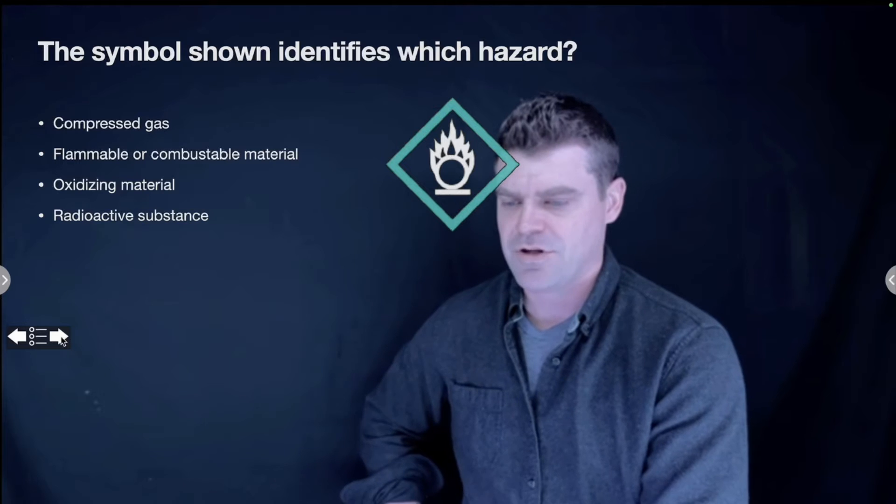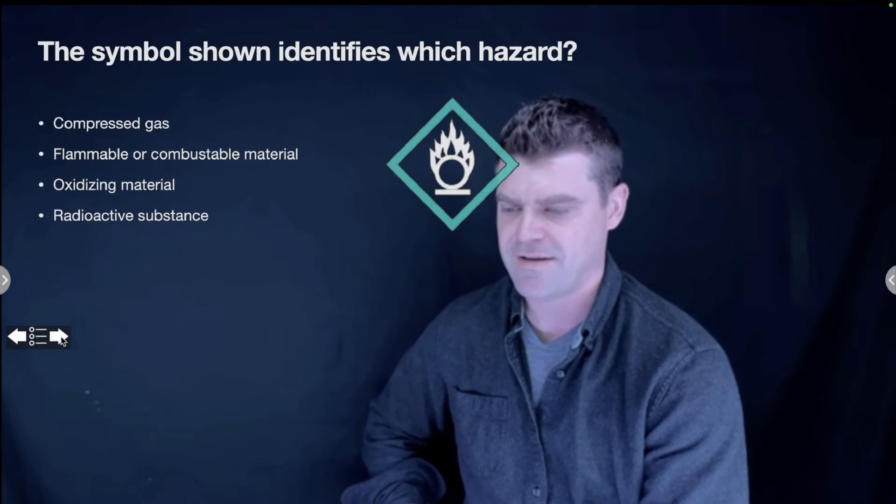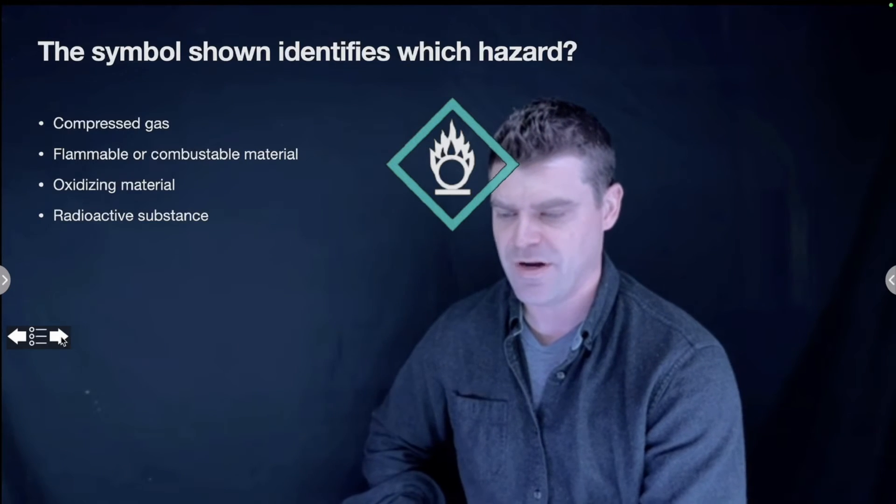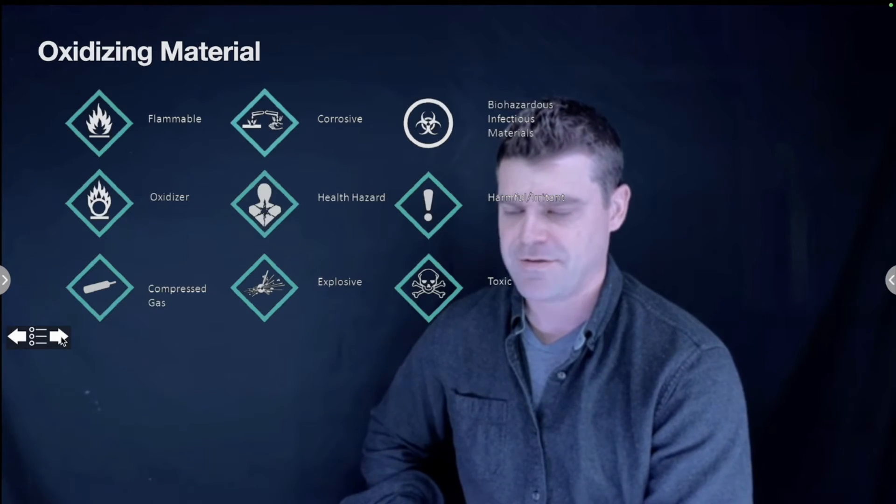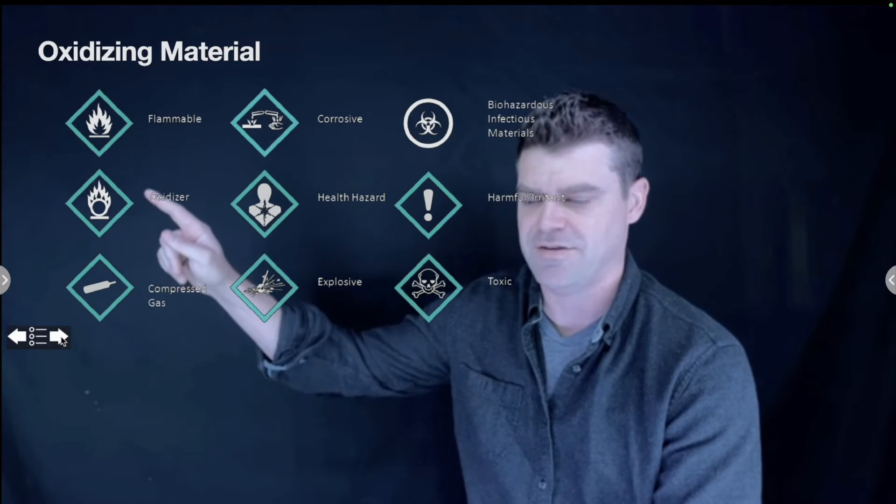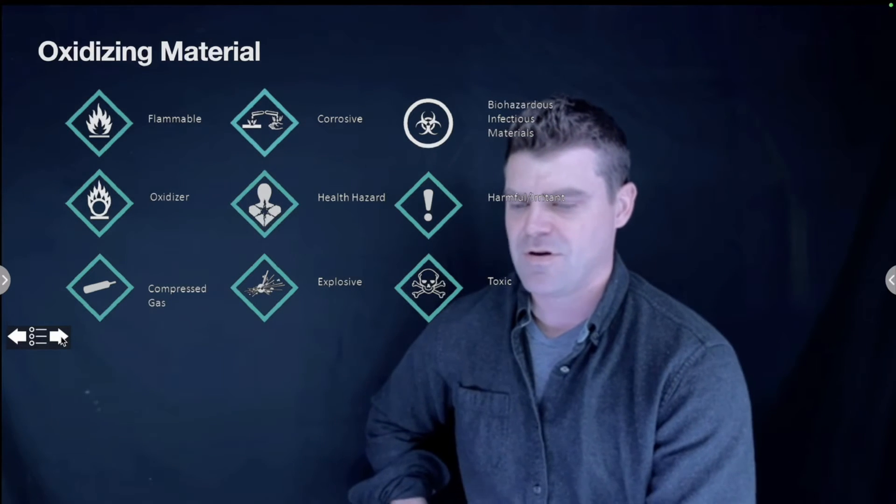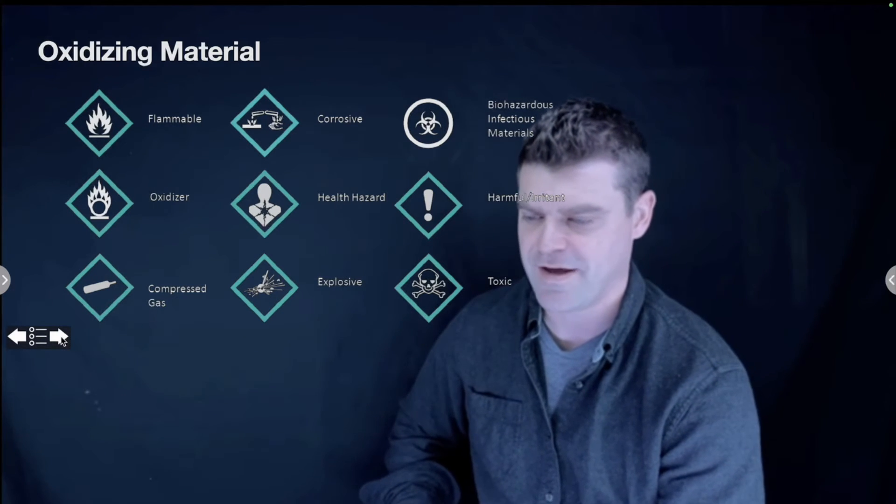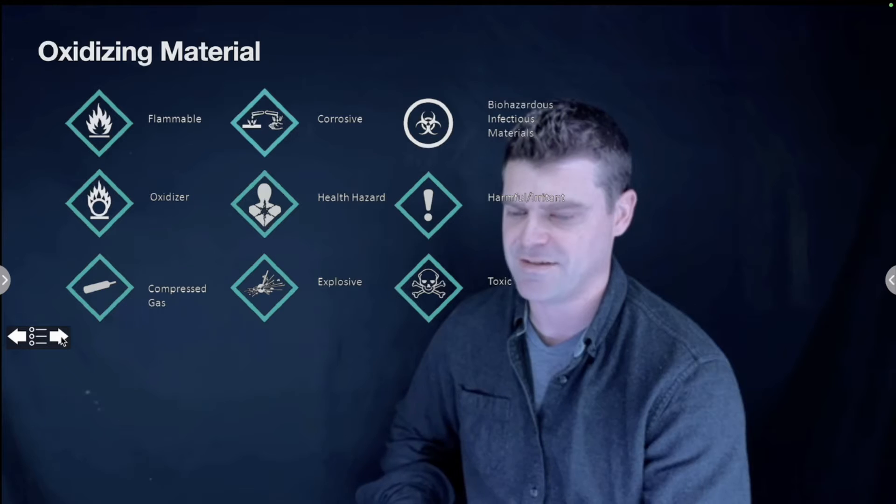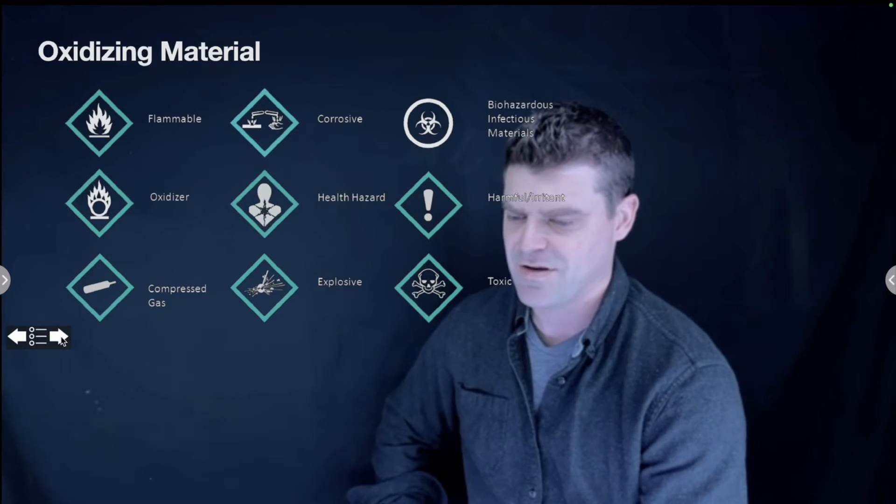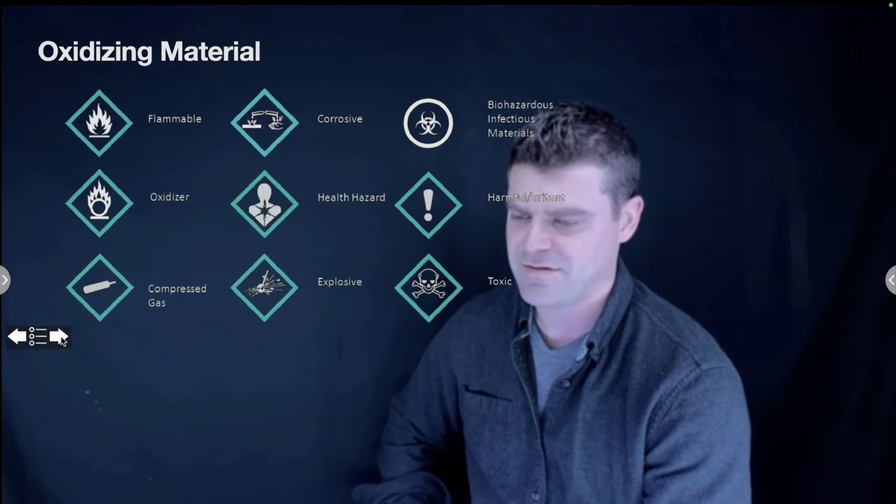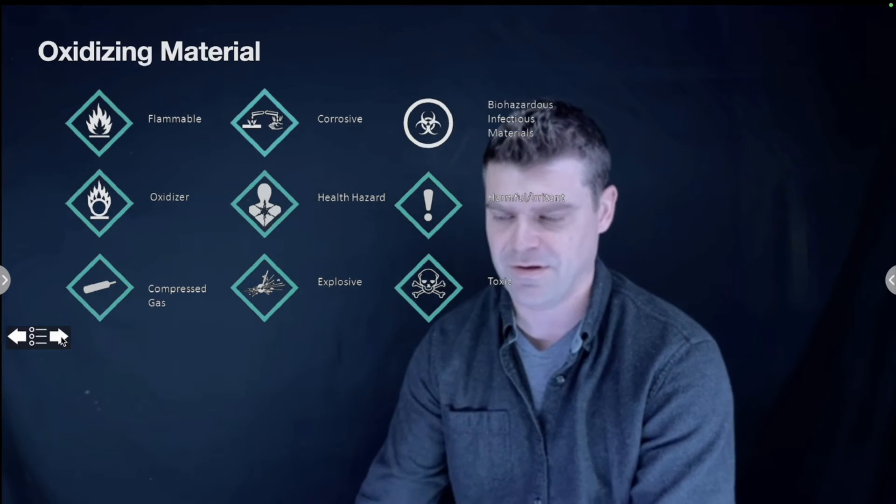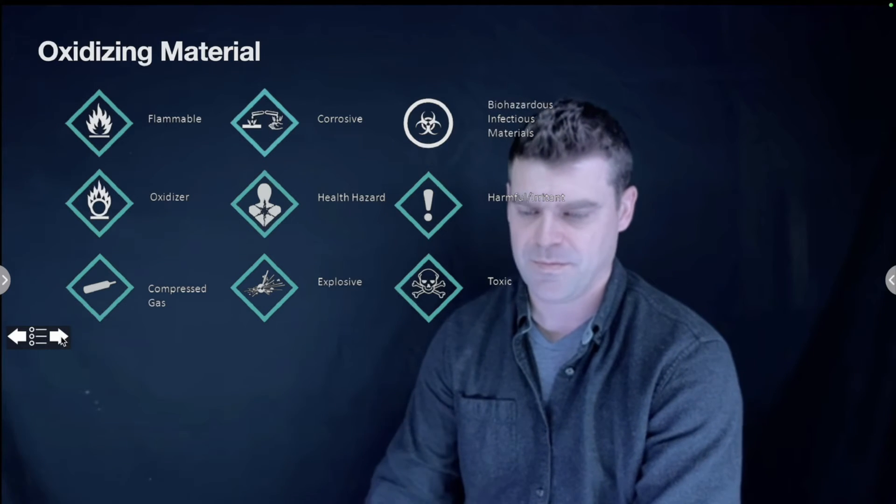The symbol shown identifies which hazard: compressed gas, flammable or combustible material, oxidizing material, or radioactive substance? The answer is oxidizing. These are all of your hazard symbols: flammable, corrosive, biohazard, harmful, health hazard, oxidizer, compressed gas, explosive, toxic. There's a radioactive one in there somewhere that's kind of specialized. Those are for the most part the symbols that you'll need to know that could be on a test.